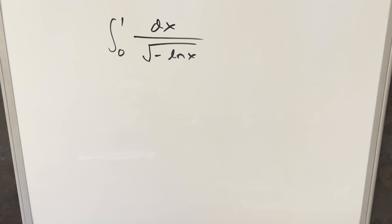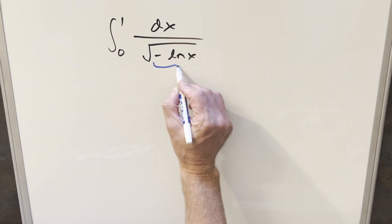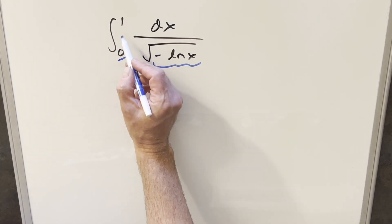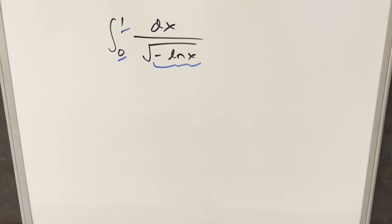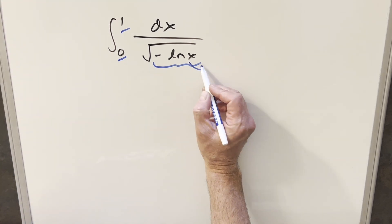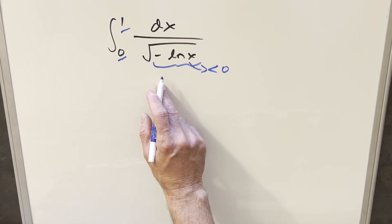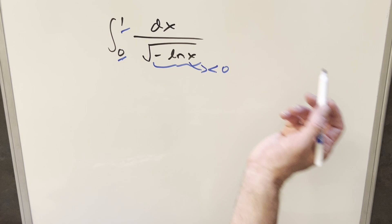First, the concern I had was the minus sign inside the square root. If everything's negative inside the square root, then we've got a problem. The key thing is the bounds. We're going from 0 to 1, and when x values are between 0 and 1, natural log x is always less than 0. So minus times the negative number means everything in the square root is positive. This is no problem at all.